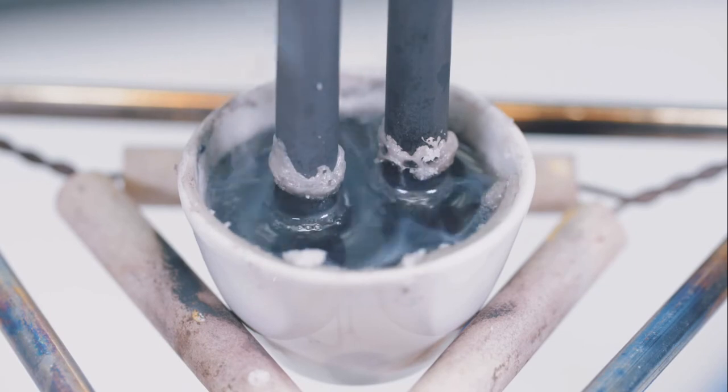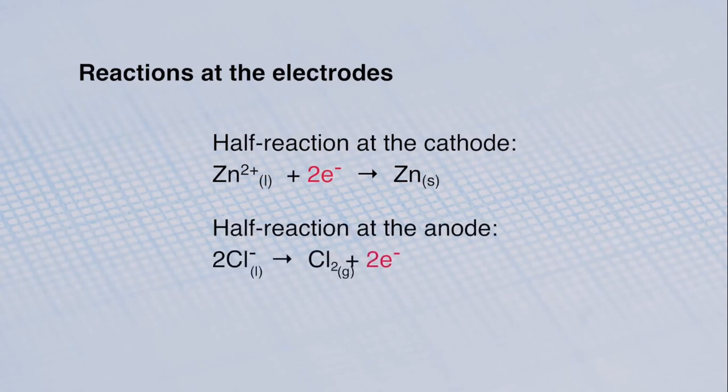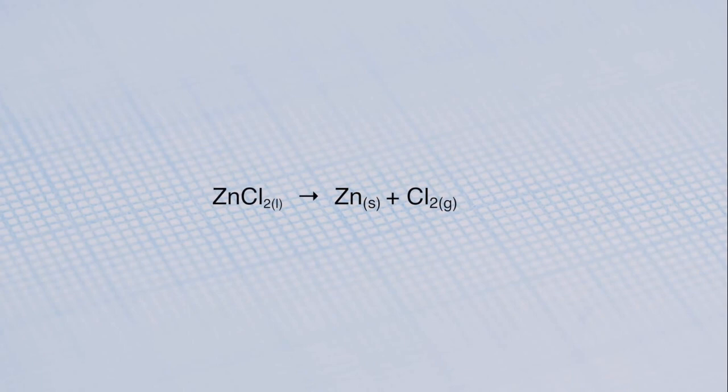Molten zinc chloride has been decomposed into its elements using electricity. At the cathode, zinc ions are reduced to zinc. And at the anode, chloride ions are oxidised to chlorine. These half reactions can be combined to cancel the electrons. This gives the overall equation for the reaction.